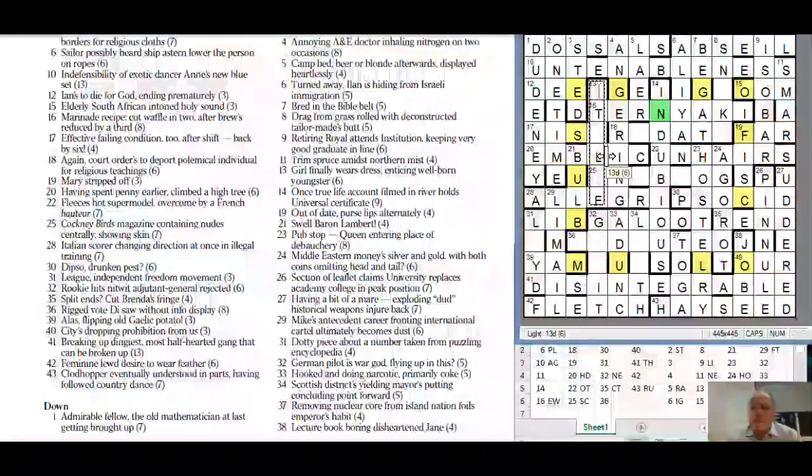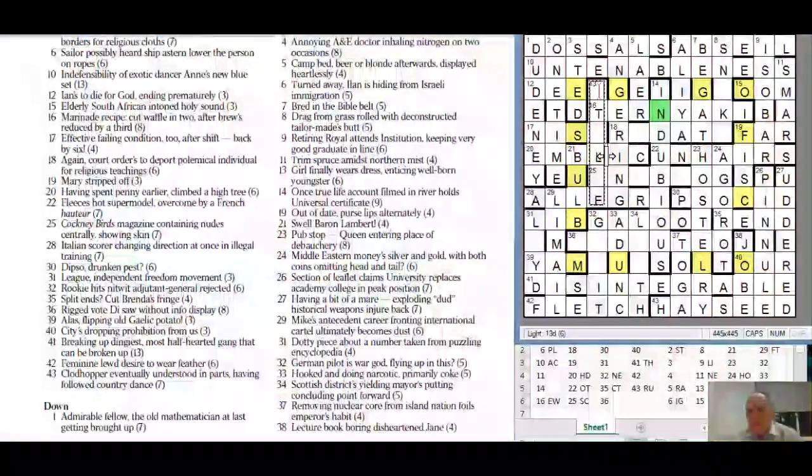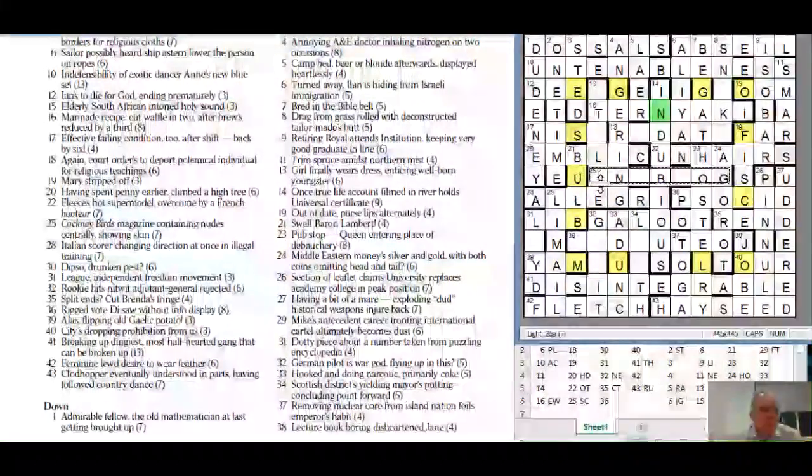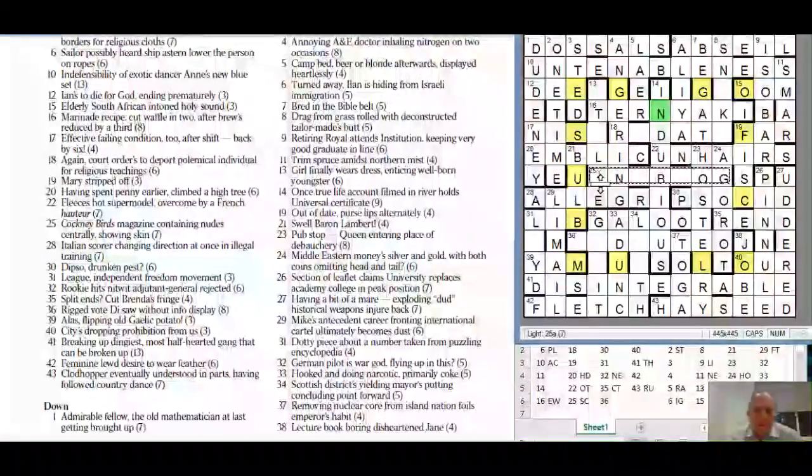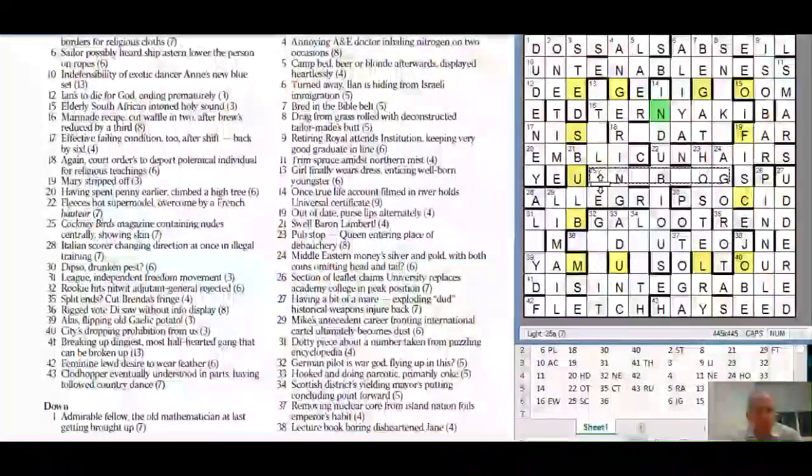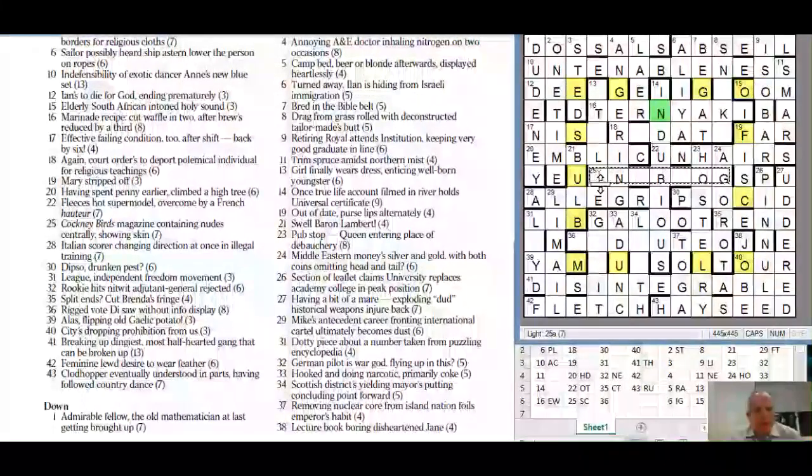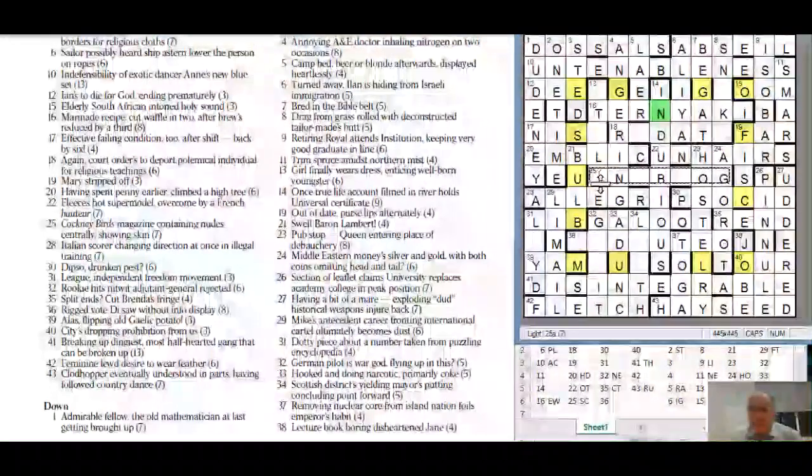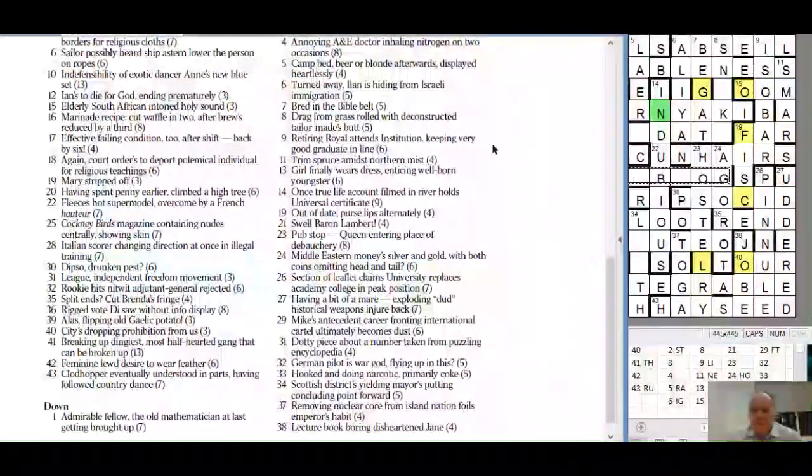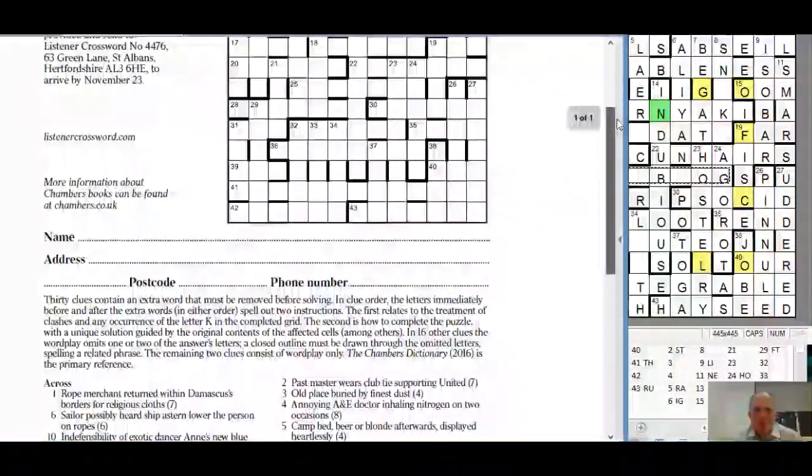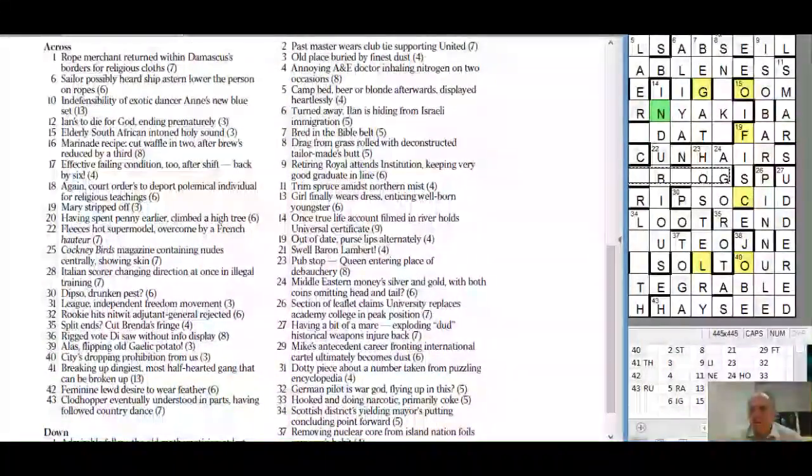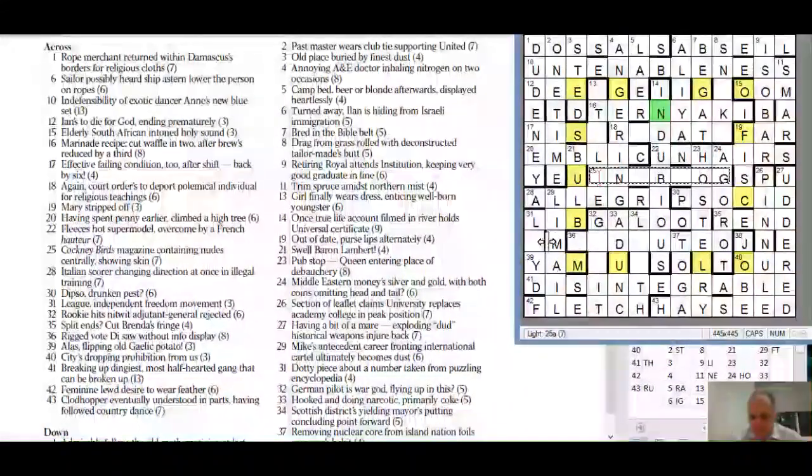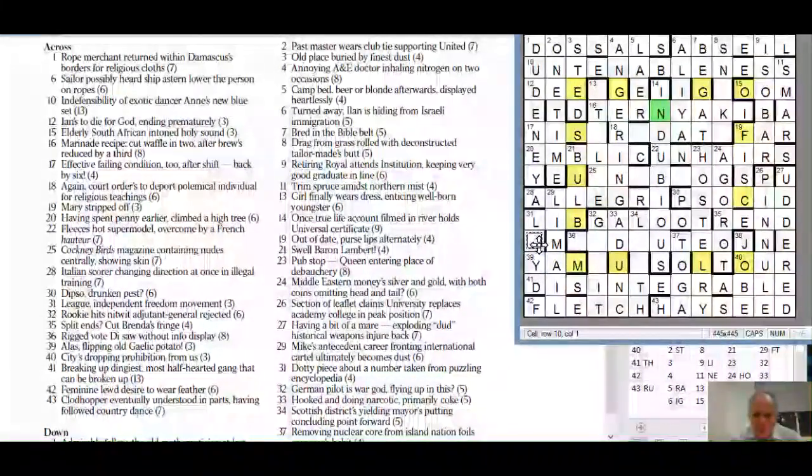Seventeen across: effective failing condition after shift back by six. The well-born youngster is a Sloan so that could be an L. Looking for too many clashes here. Twenty five across those cockney birds I still think ends - magazine containing news showing skin. I definitely haven't made this too long have I. It's meant to be seven letters.